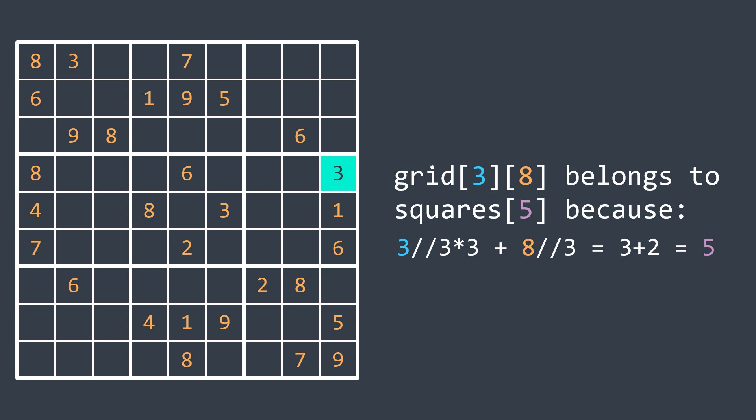For example, if a cell is at row 3, column 8, then it belongs to square 5, because 3 divided by 3 is 1, multiplied by 3 is 3, plus 8 divided by 3, which is 2, we get 5.